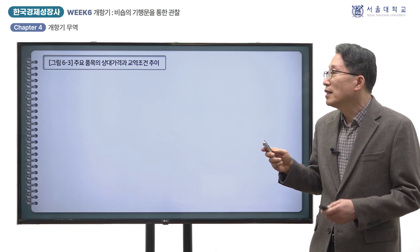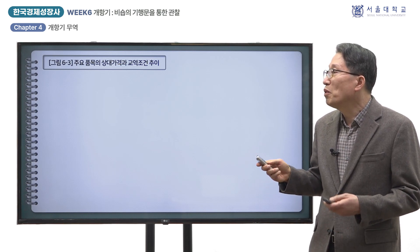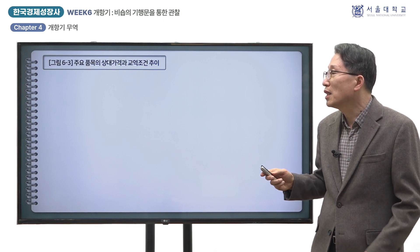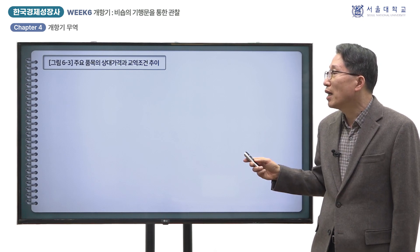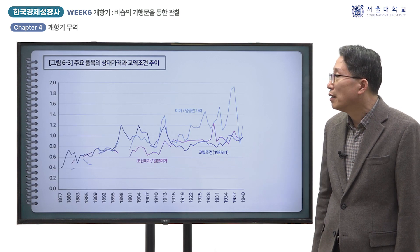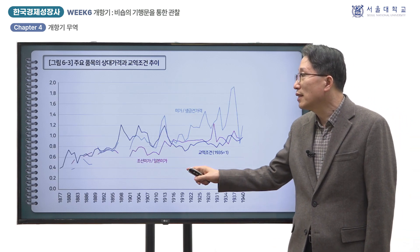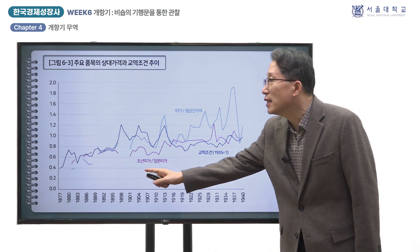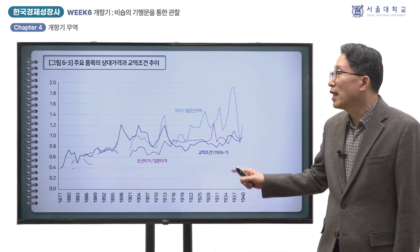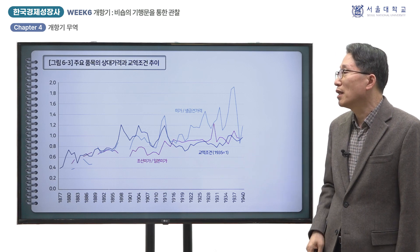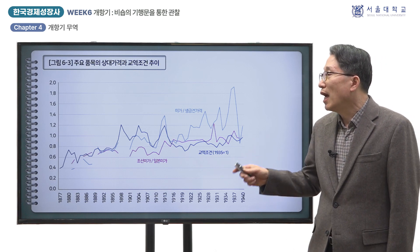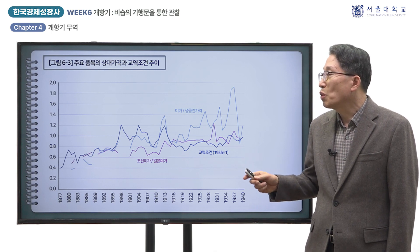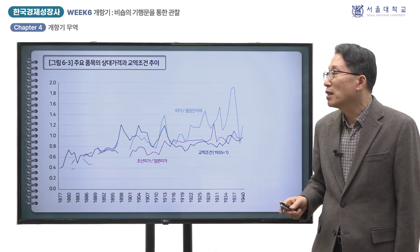쌀과 생금건은 개별 품목인데, 이를 전체 수출 및 수입 품목으로 확대해서 본 것이 그림 6-3의 교역 조건입니다. 그것은 1935년을 1로 하는 지수인데, 1870년대에 0.47에서 1900년대에는 0.99로 크게 높아졌습니다. 즉 이것은 개항기의 무역을 통해 조선의 소비, 따라서 소득 수준이 그만큼 더 높아졌음을 뜻합니다.